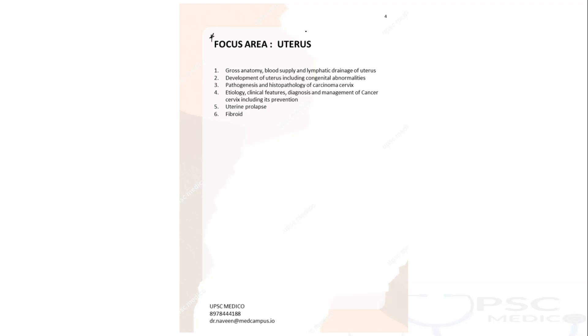Looking at uterus — in the syllabus, the anatomy gross anatomy part, the core anatomy organ-specific part, has syllabus covering gross anatomy, blood supply, and lymphatic drainage. Similarly, in embryology, the syllabus covers development of uterus including congenital abnormalities. When you understand uterus anatomy, you will definitely understand the different pathologies of the uterus which are given in the gynecology syllabus.